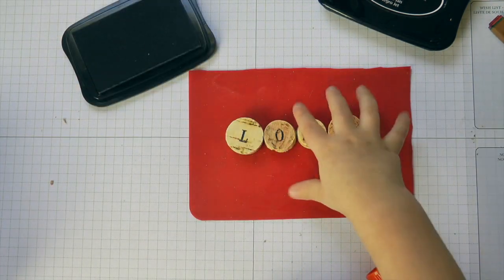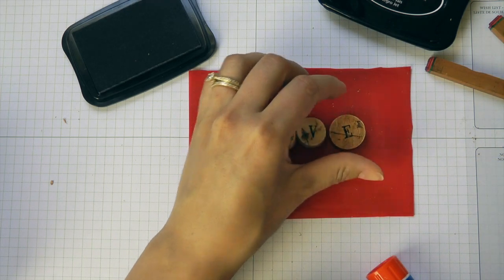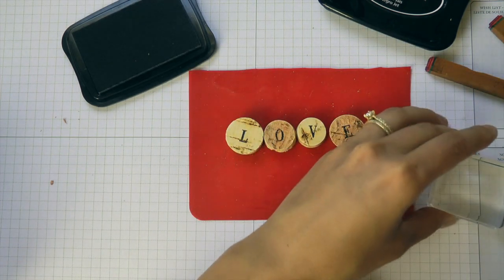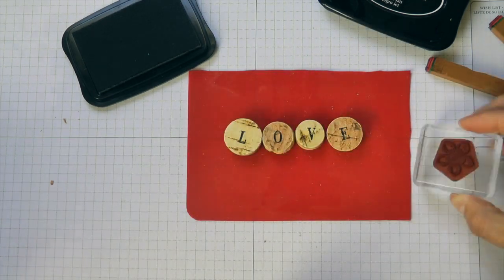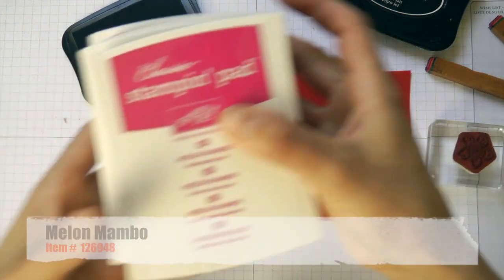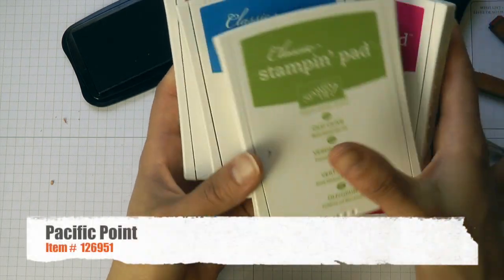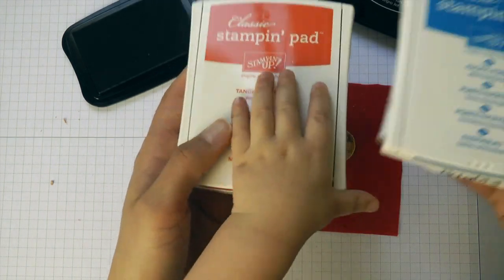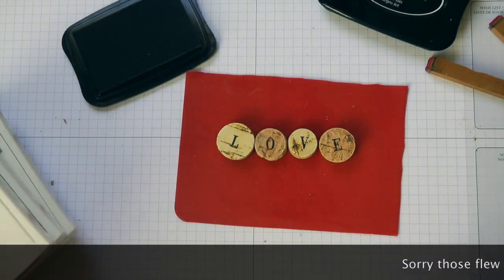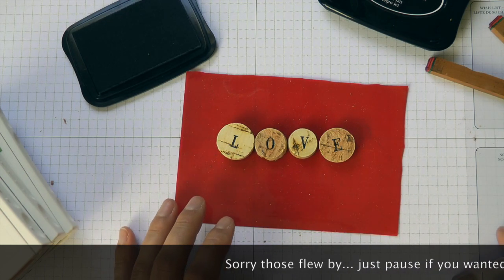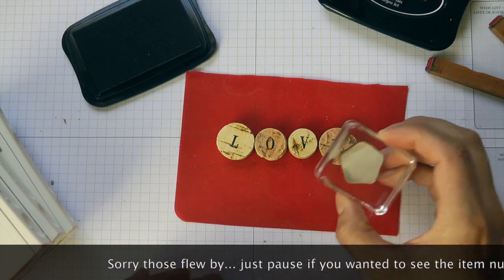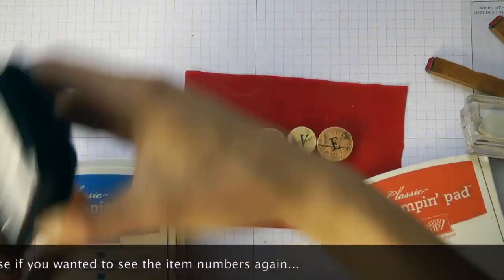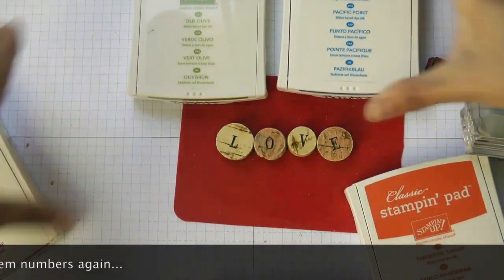Next we are going to take our flower stamp right here. I have Melon Mambo, Old Olive, Pacific Point, and Tangerine Tango. These are all from the Brights Collection. We're going to take that and stamp it. I think I'm going to do blue, pink, green, and orange. So Pacific Point, we're going to take our stamp.